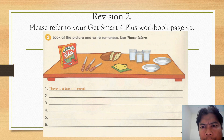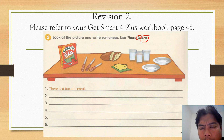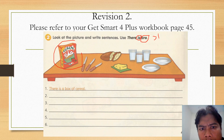Look at the pictures and write sentences — use 'there is' and 'there are'. 'Is' is for singular noun, that is one, and 'are' is for more than one. Look at the first one: there is a box of cereal. Referring to this cereal, there is only one, so we write down 'a box'.